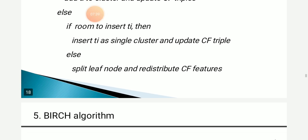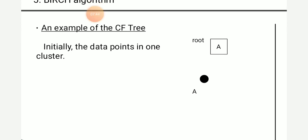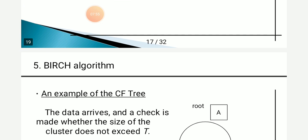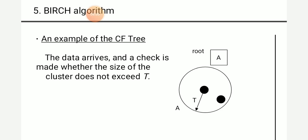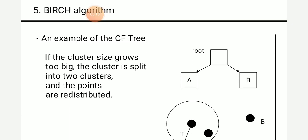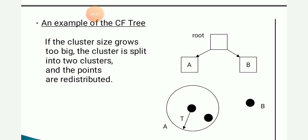In the example, initially we have only one data point A labeled as root. When a new data point arrives, we check whether the cluster size does not exceed the threshold. If satisfied, the second data point is allocated to node A. If the cluster size grows too big, we split the cluster into two subclusters and redistribute the points. For example, two points are allocated to cluster A, but data point B is further away from the points in cluster A, so B is allocated into a separate subcluster, giving us two subclusters.